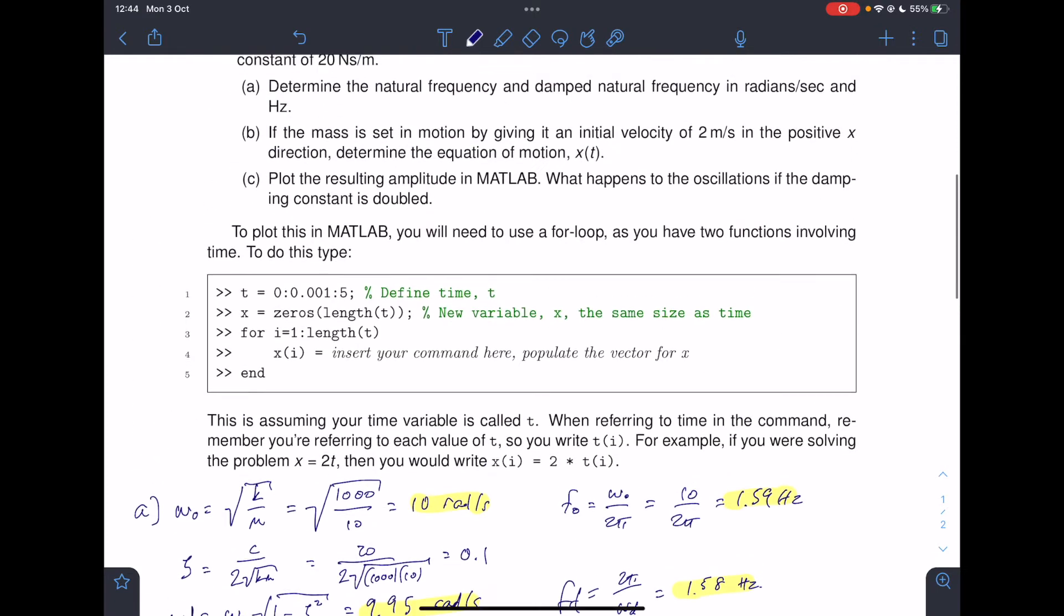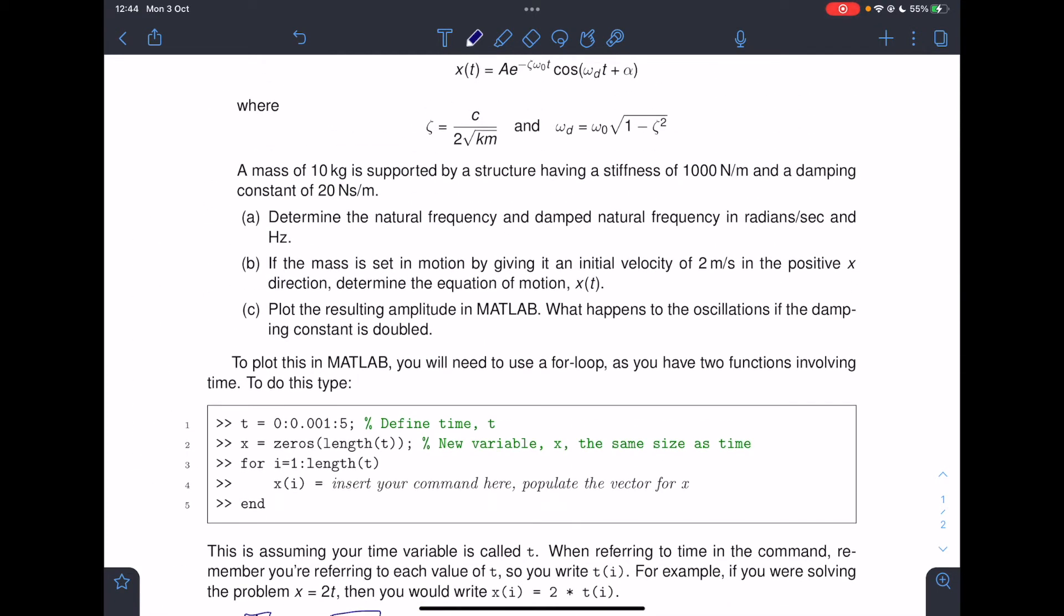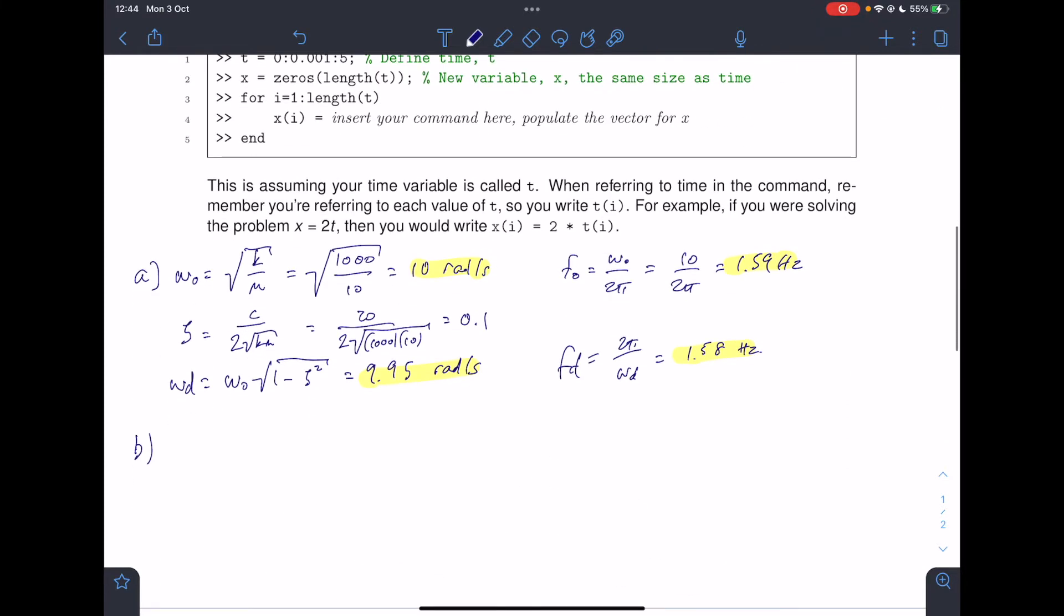So part B says that we need to find the equation of motion x(t), assuming that the mass is set in motion by giving it an initial velocity. The unwritten thing there is that the initial displacement when it's set in motion is 0. So we know some initial conditions: x(0) equals 0, and the initial velocity x dot of 0 is going to be 2 meters per second.